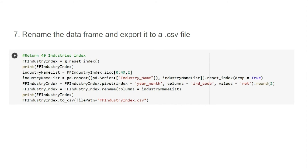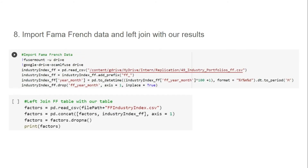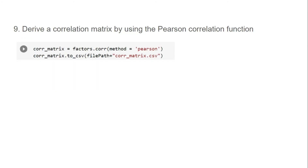We rename the data frame and export the data to a CSV file. Next, we import Fama-French data and compare them to our results — we get the Fama-French data from Ken French's website. We left-join our result table to the Fama-French table, and finally we derive a correlation matrix using the Pearson correlation function and export the correlation data to a CSV file. That concludes our video — I hope you found this helpful!